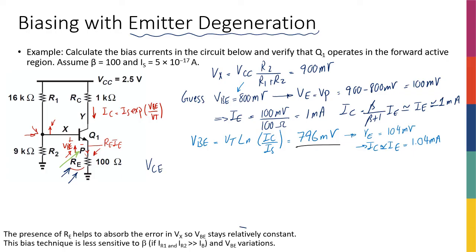VCE is going to be VC minus VE. So it's equal to, VC is VCC minus RC IC, and VE is equal to 100 millivolts. So I have 2.5 minus 1K times 1 milliamp minus 0.1. This is 1K times 1 milliamp is 1 volt. This is 1.5 minus 0.1, so it's 1.4 volts. This is greater than 0.2, so active, it's the forward active region. Very good.